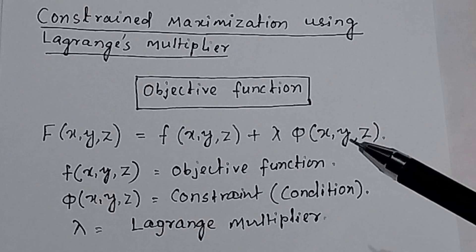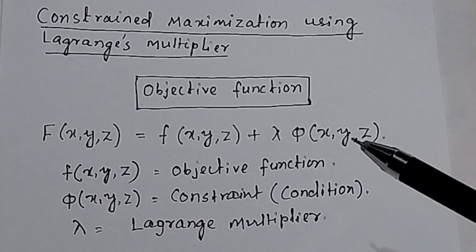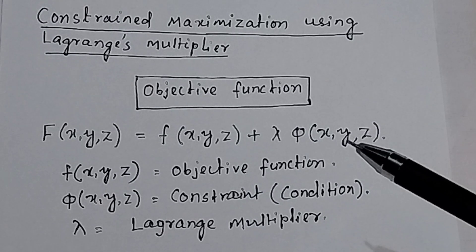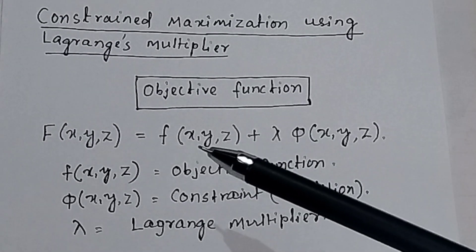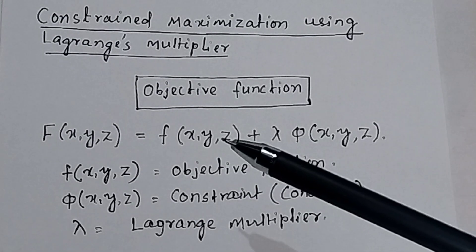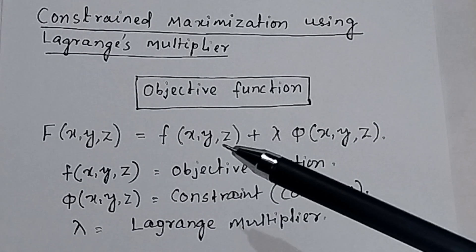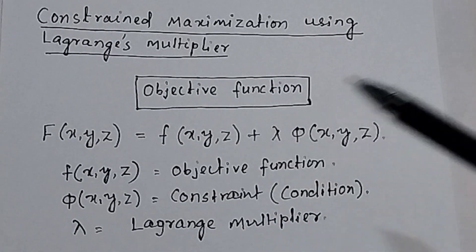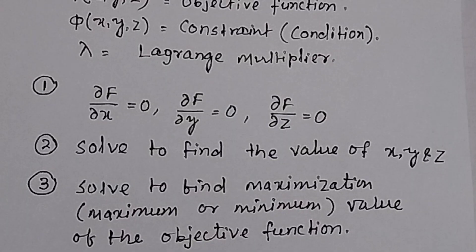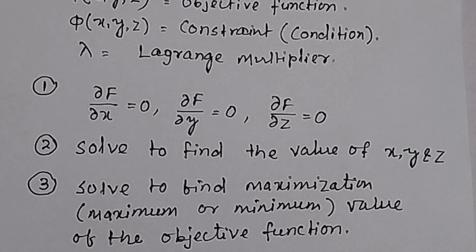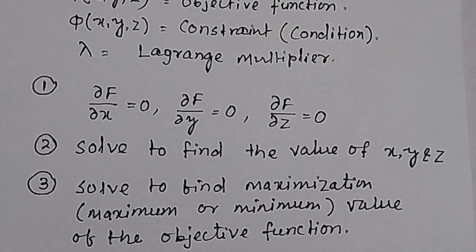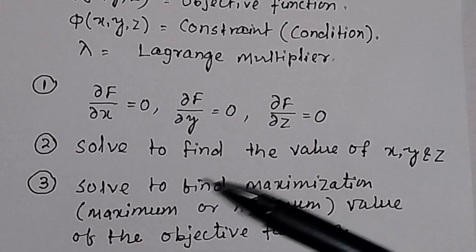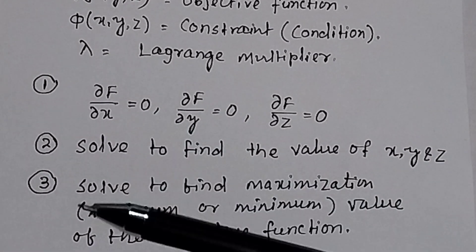So, how can you find the minimum or maximum value of this objective function by the Lagrange multiplier method? To find the constraint maximization using Lagrange multiplier, you have to follow these three steps.